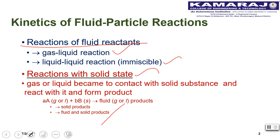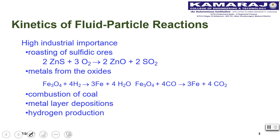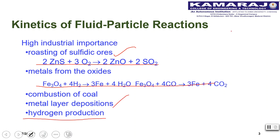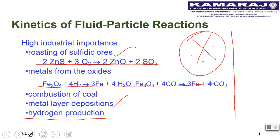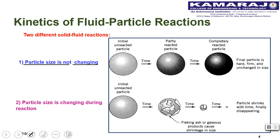In such reactions we have two different cases to consider: one where particle size remains unchanged, and one where it changes. Some examples of fluid-particle reactions of high industrial importance include roasting of sulfide ores where ZnS reacts with oxygen to give ZnO and O2, production of metals from oxides, combustion of coal, and metal layer deposits protected by hydrogen. These all come under the category of fluid-particle interaction in the absence of a catalyst.